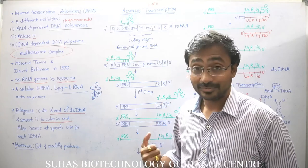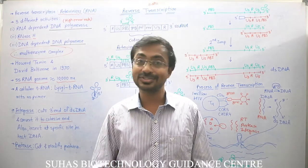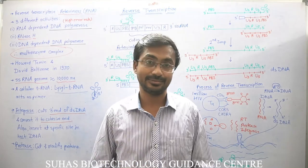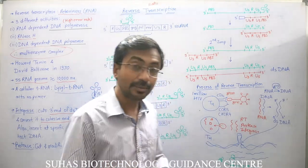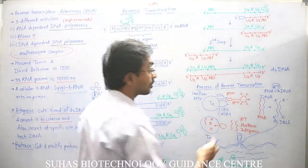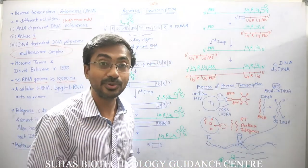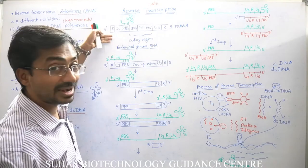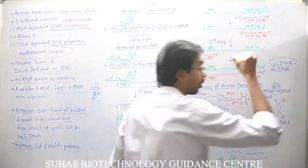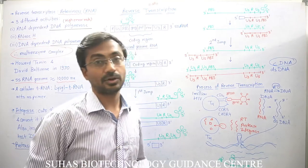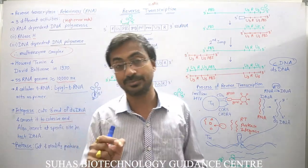The enzyme reverse transcriptase is also used in a technique called cDNA technology. The double-stranded DNA formed from RNA is called cDNA — complementary DNA — because it is complementary to the original RNA. In cDNA technology, we start with RNA and use isolated reverse transcriptase to produce double-stranded cDNA.